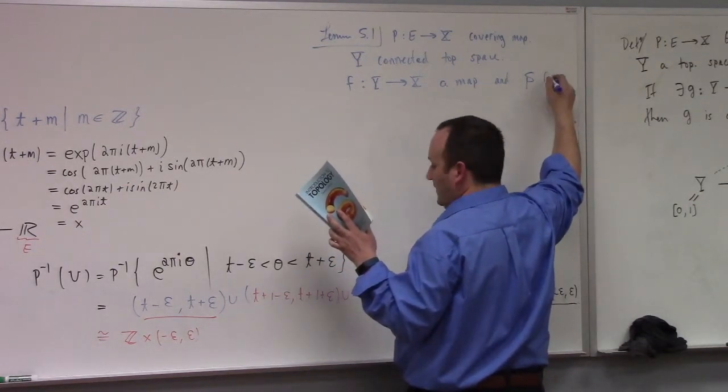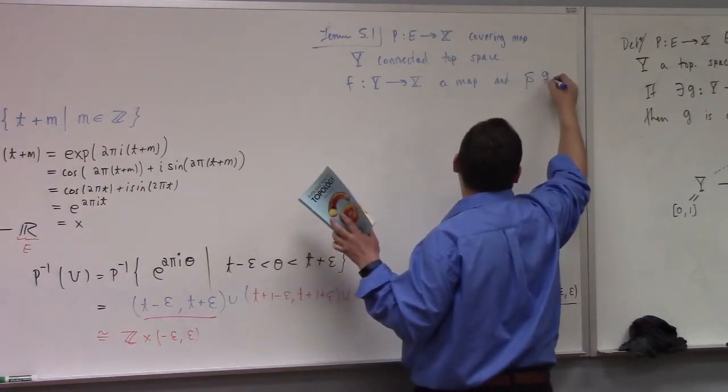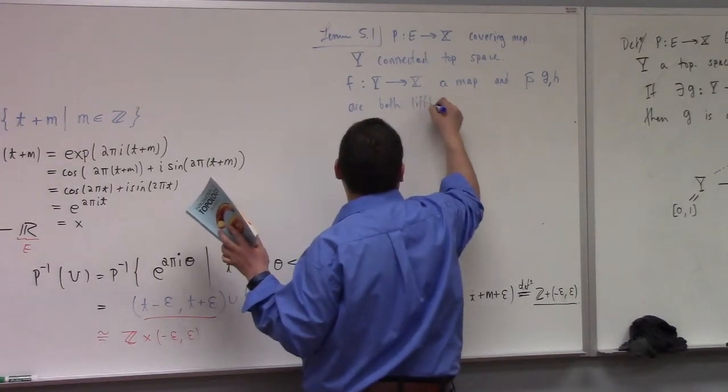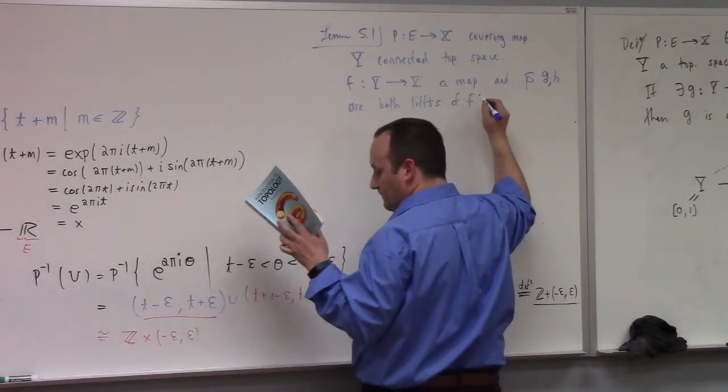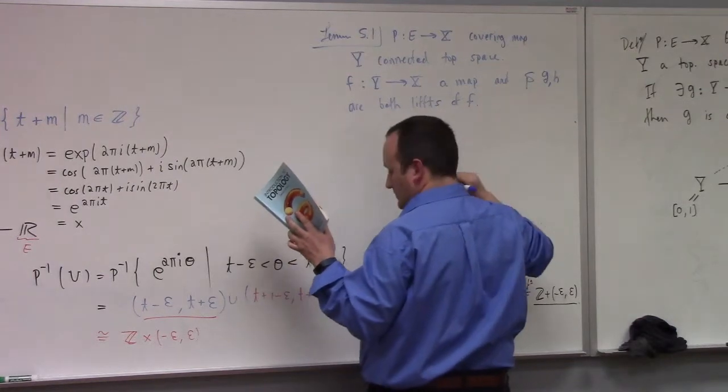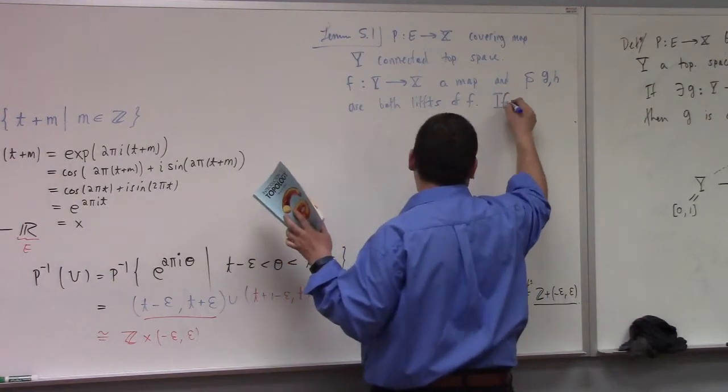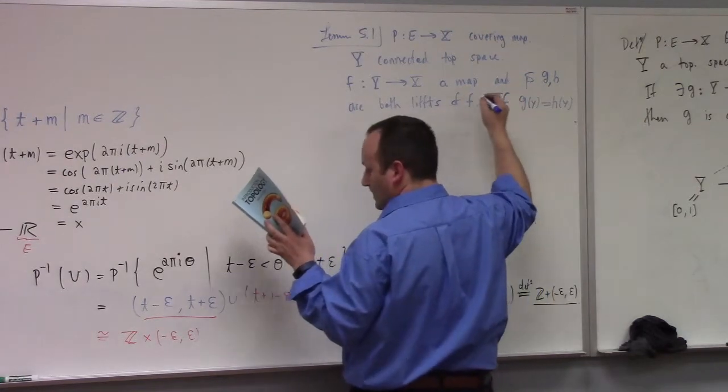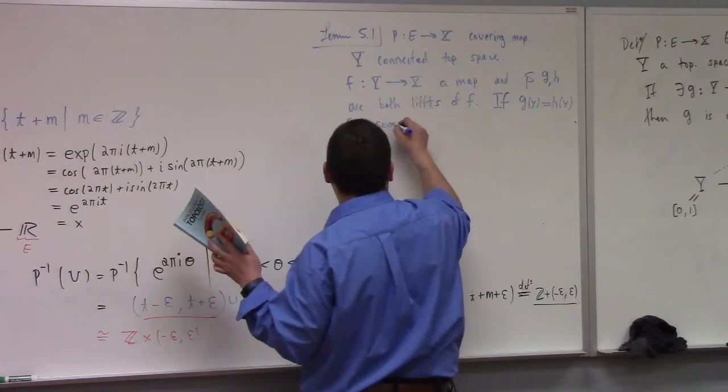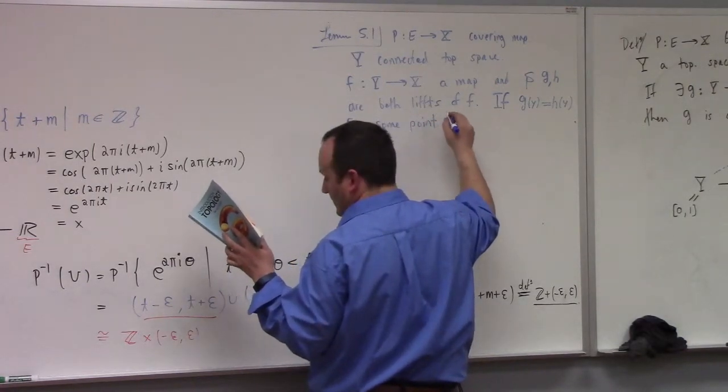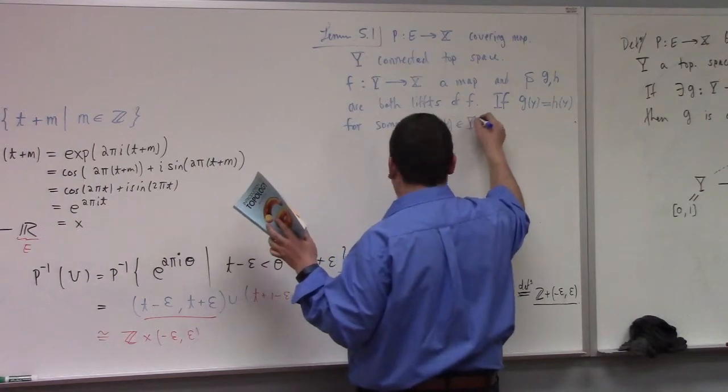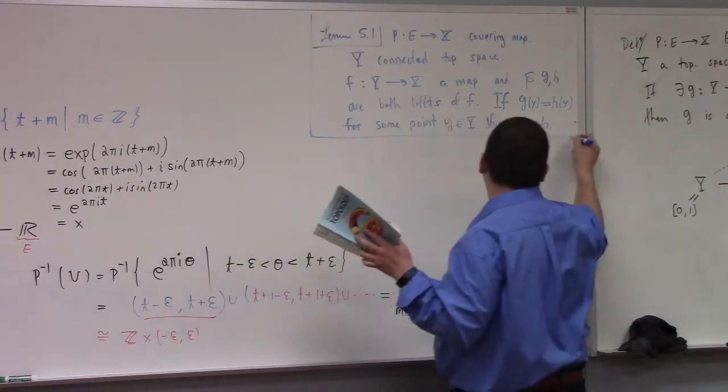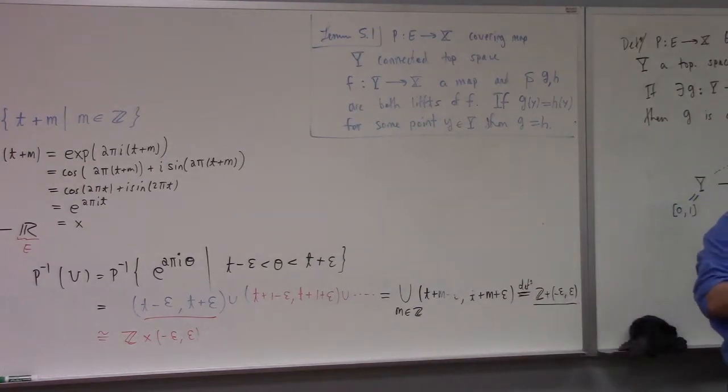Suppose g and h are both lifts of f. Here it is: if g(y) is equal to h(y) for some point, just one will do, y in Y, then g equals h.